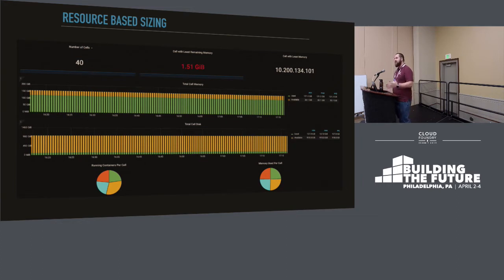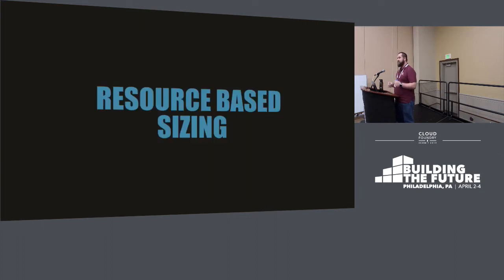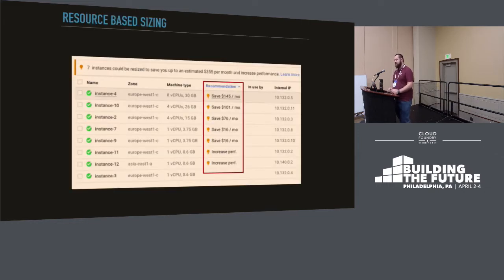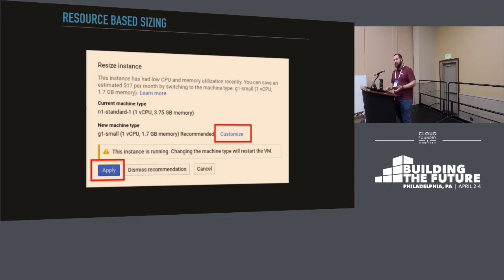So let's say we scale back all of our Diego cells and we've got that about right. But are we utilizing each VM to its full capacity? That's where we have to talk about resource-based sizing — how do we size our VMs appropriately in order to use the most of our hardware? If you've ever been on GCP, you've probably noticed something like this in the dashboard because it says you can save $145 a month. Well, if you click that, it'll say: we recommend that you resize this instance because you're not really utilizing it effectively. We see that you've got three gigs of RAM and you really only need 1.72 gigs of RAM.